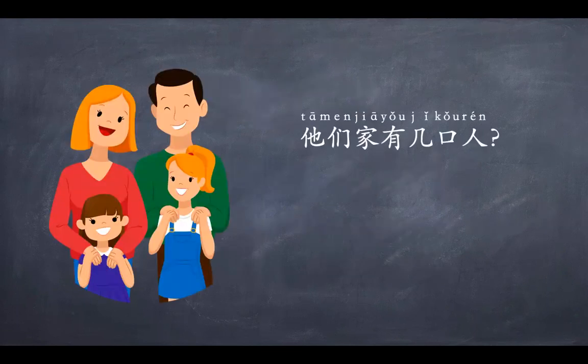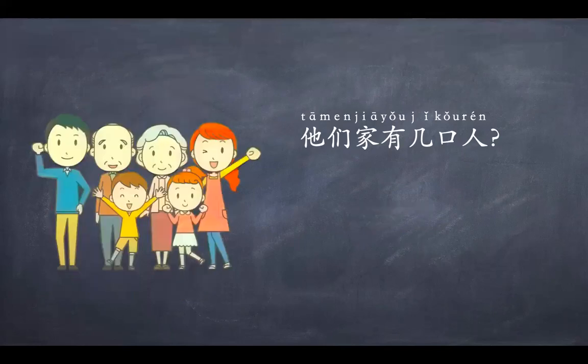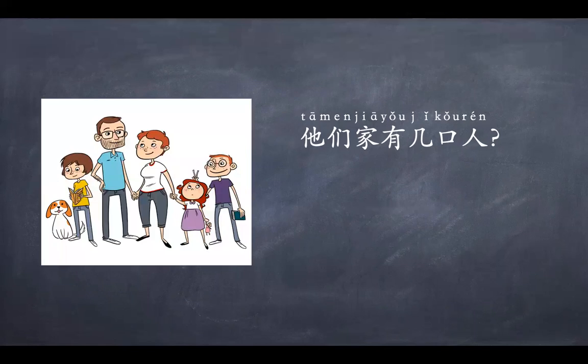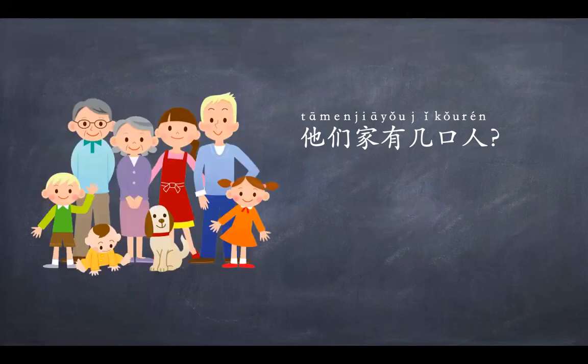Now let's look at some other families. 他们家有几口人? 四口人. 他们家有几口人? 六口人. 他们家有几口人? 五口人. 他们家有几口人? 七口人.